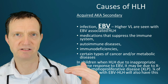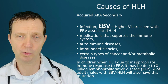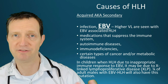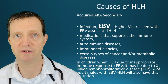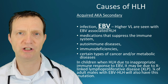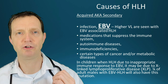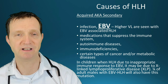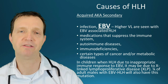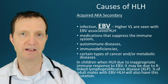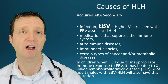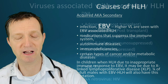Medications that suppress the immune system can also cause secondary HLH, as can autoimmune diseases, immunodeficiencies, and other infections that reduce the immune system, such as HIV, as well as certain types of cancer or metabolic diseases. In children, when HLH is due to an inappropriate response to EBV, this may be due to X-linked lymphoproliferative disease, known as XLP, and a quarter of adult males with EBV-HLH also have this particular mutation. Lots of viruses can cause secondary HLH.